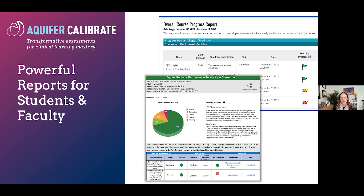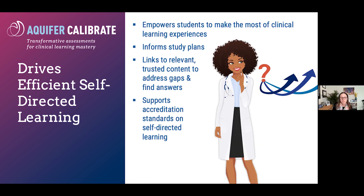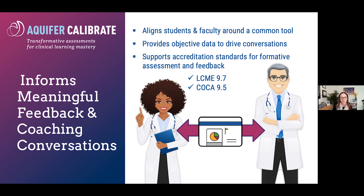Faculty and programs receive high-level views of student performance and detailed views of cohort performance for curricular planning. With their complete learning picture identified, students are now armed with the information they need to create targeted study plans. Calibrate's detailed results help students take the next step, providing what they need not just to find the answer, but to understand the clinical context and to leverage this information throughout their patient care experiences.